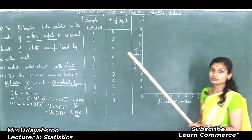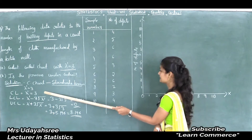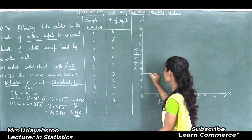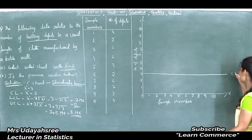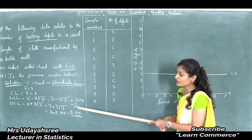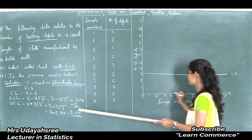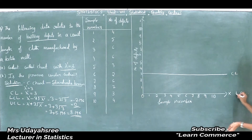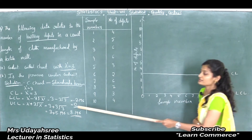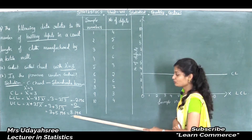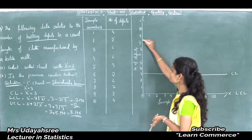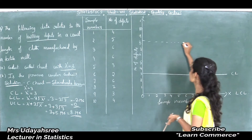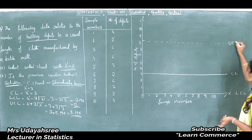Now see the control limits on the graph. The central line is 3, so I draw a horizontal line at 3. The lower control limit is 0, so the x-axis itself serves as the lower control limit since the origin is 0. The upper control limit value is 8.196, so here at approximately 8.196 I draw one horizontal line — this is the upper control limit.